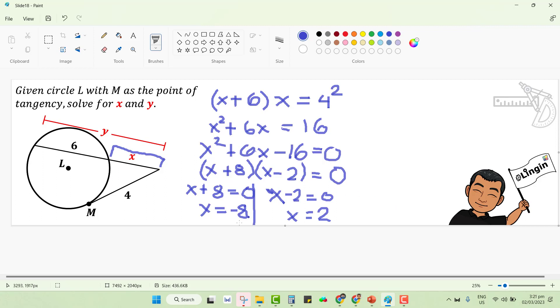Now, we have two values, but since x is a measurement or a length of a segment, we will not accept negative values. So the correct answer here is just 2. This would mean the value of x here is just 2.